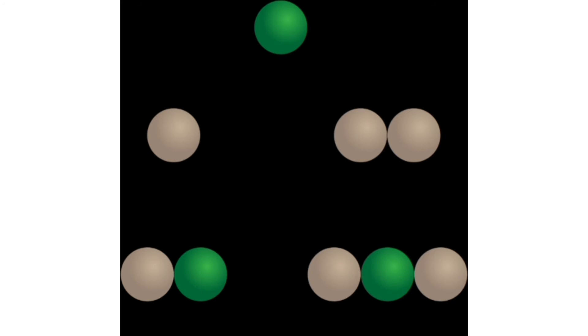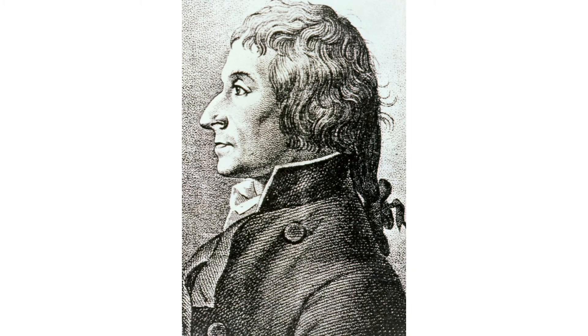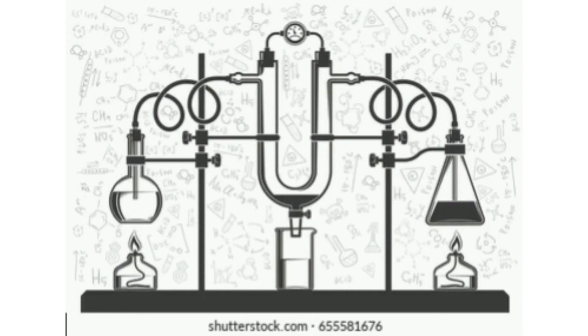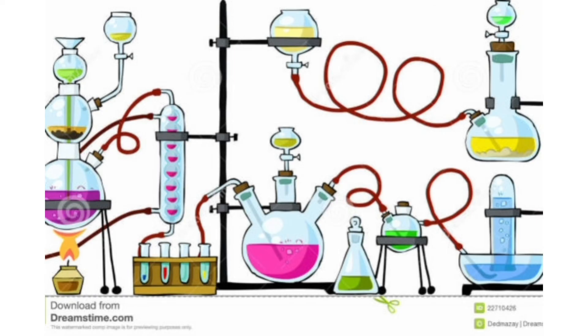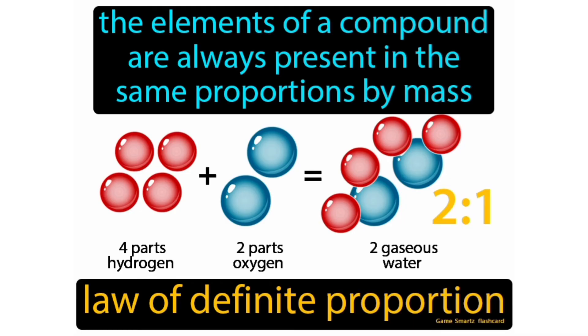Second one is law of constant proportion. It was given by Proust in 1779. He analyzed the chemical composition of a large number of compounds and came to the conclusion that proportion of each element in a compound is constant. Based on this observation, Proust formulated the law of constant proportion. According to this law, a chemical compound always consists of the same element combined together in same proportion by mass.